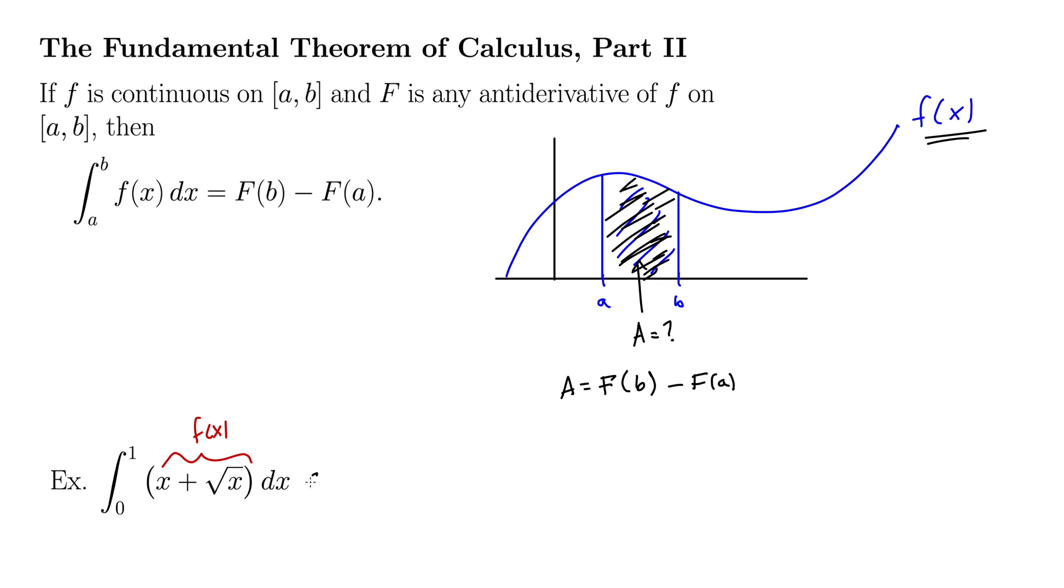Okay, let's do it. Well, how do we compute this using the antiderivative? Let's just change it up a little bit. So integral from 0 to 1. Let's think of this as x to the 1 plus x to the 1 half dx. And then we'll use the power rule for integrals, which just tells us to add 1 and divide.